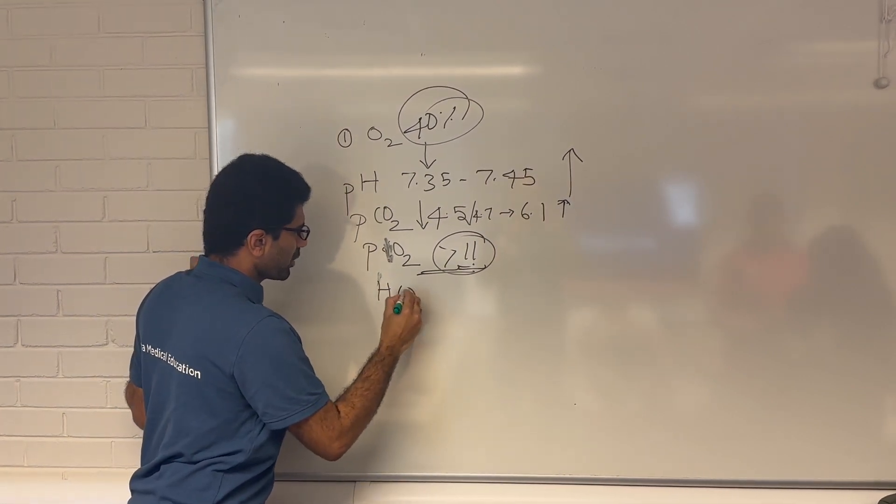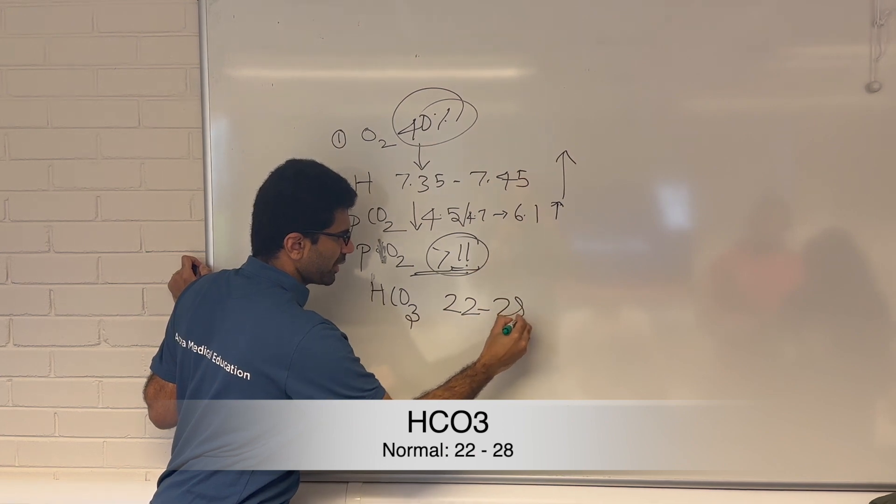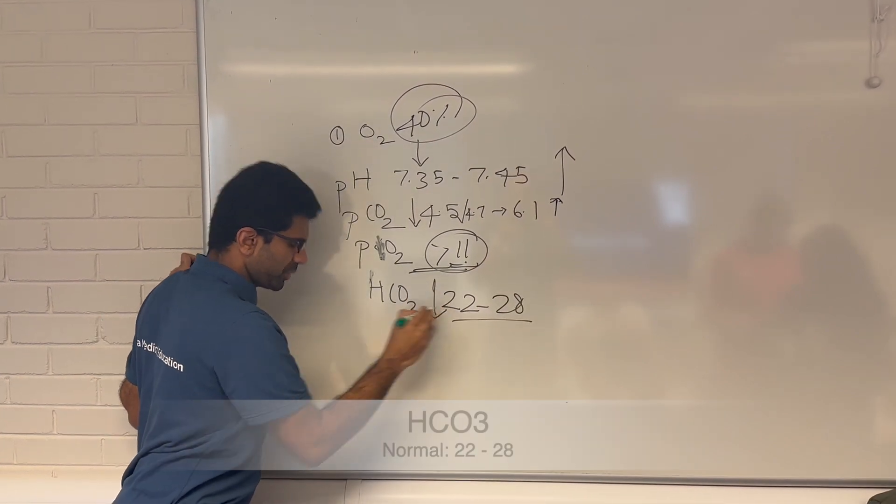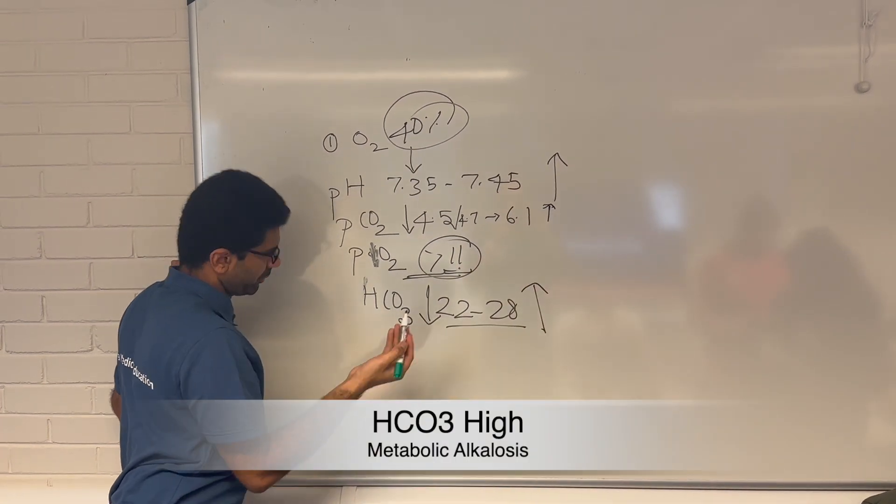Next, what's your bicarb value? 22 to 28, they say. If it is less, what happens? Metabolic acidosis. If it is more, what is it? Metabolic alkalosis.